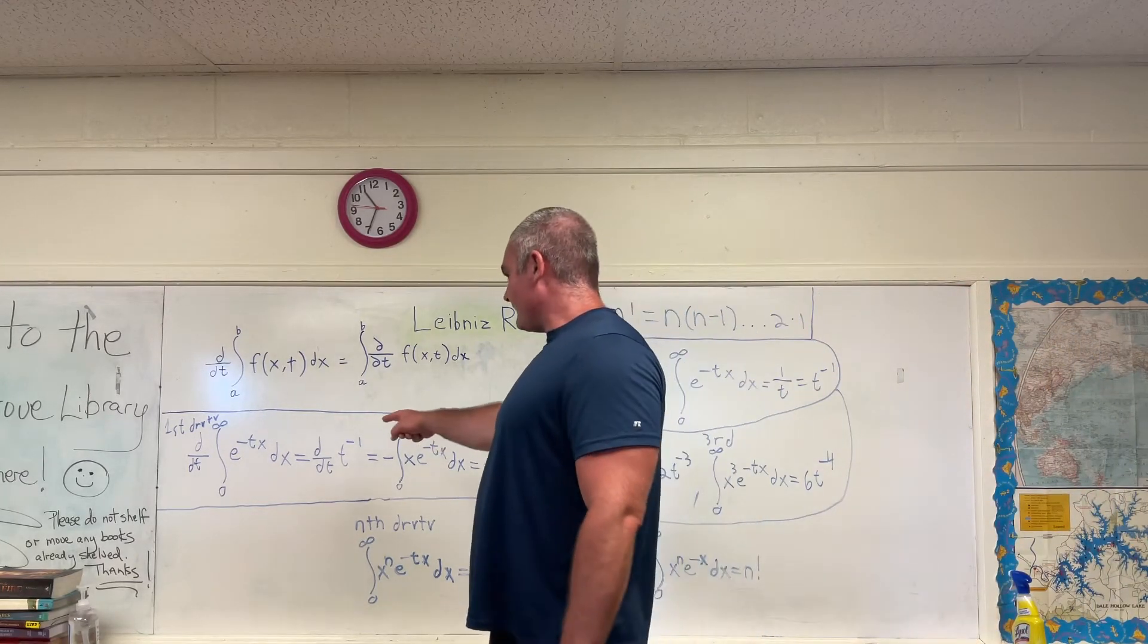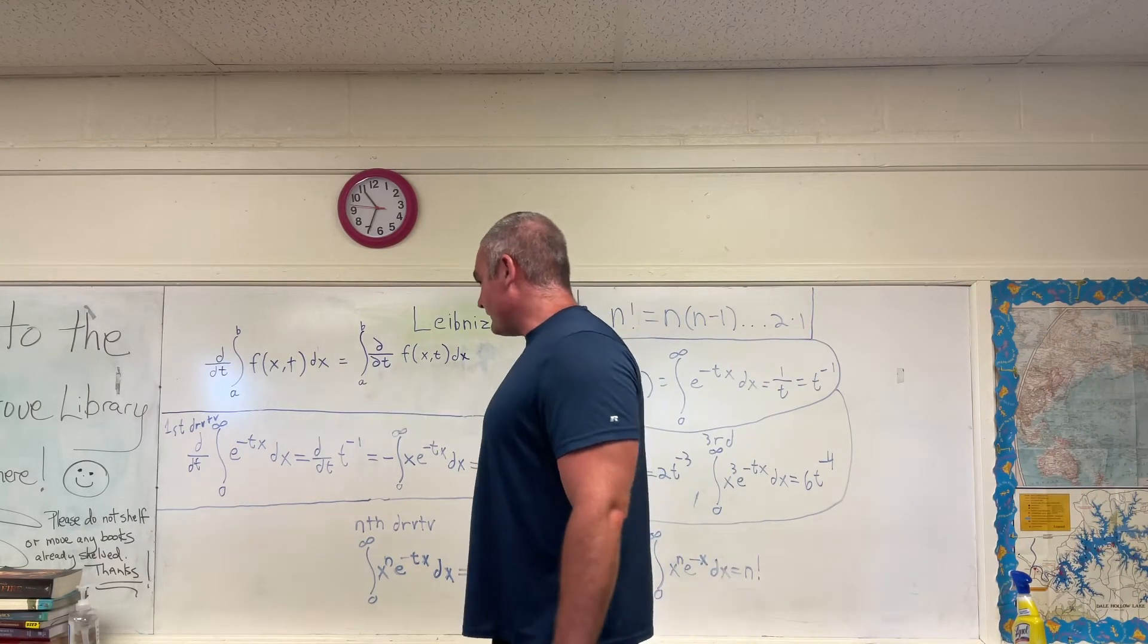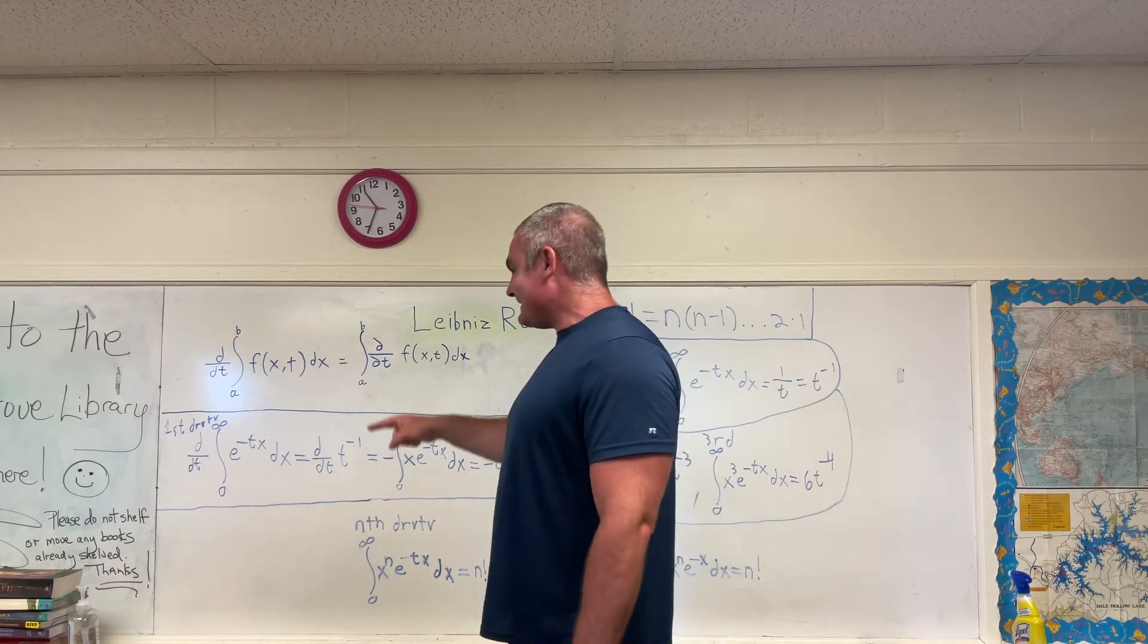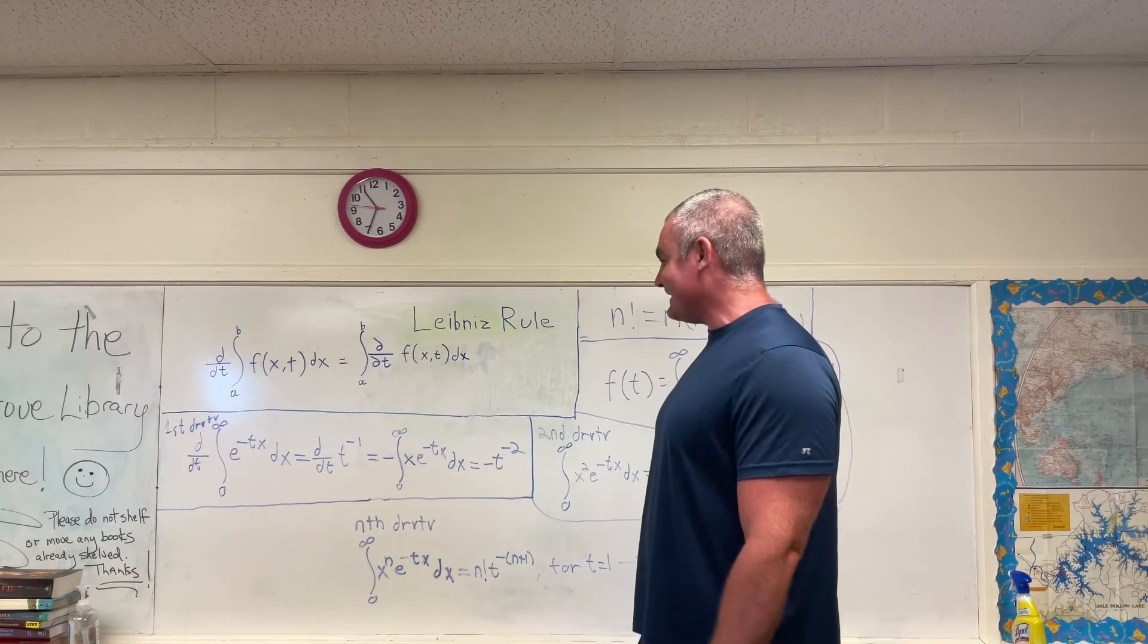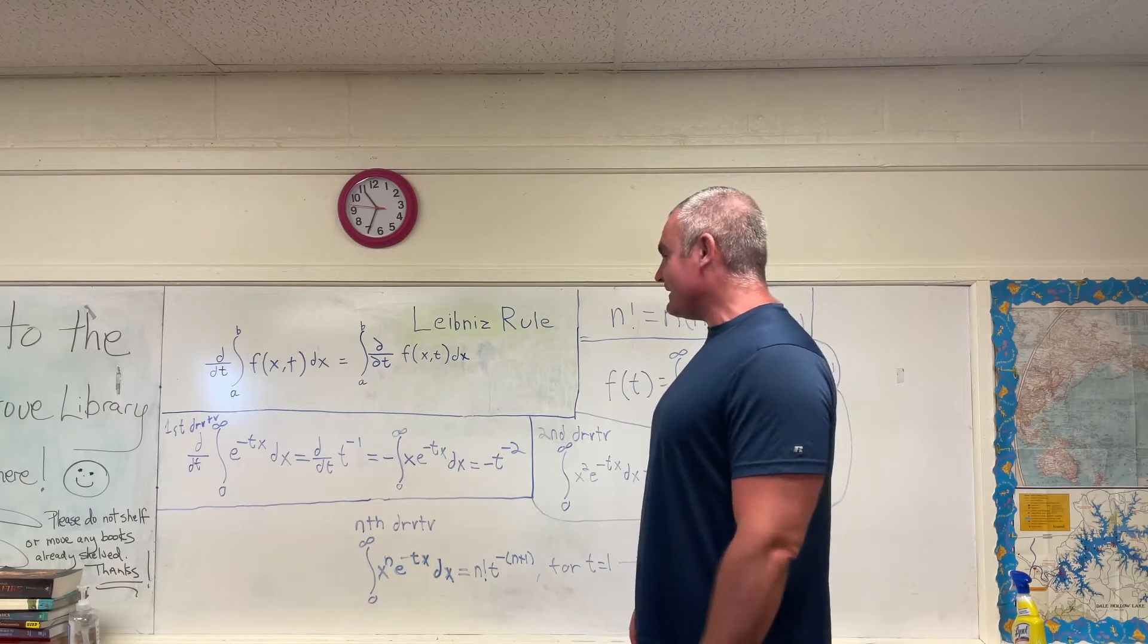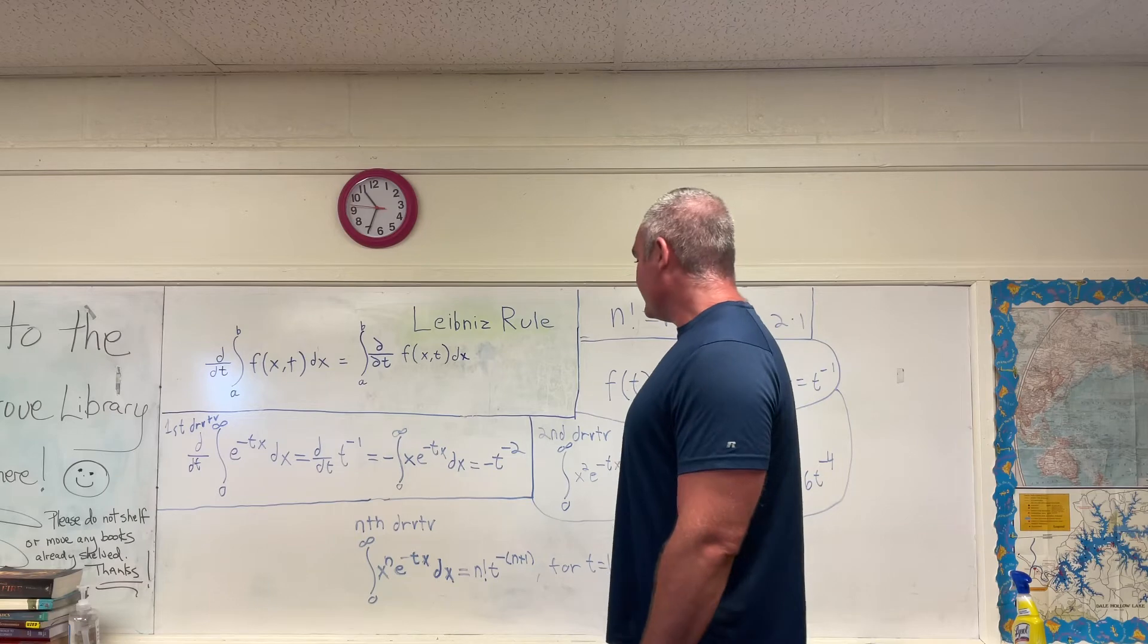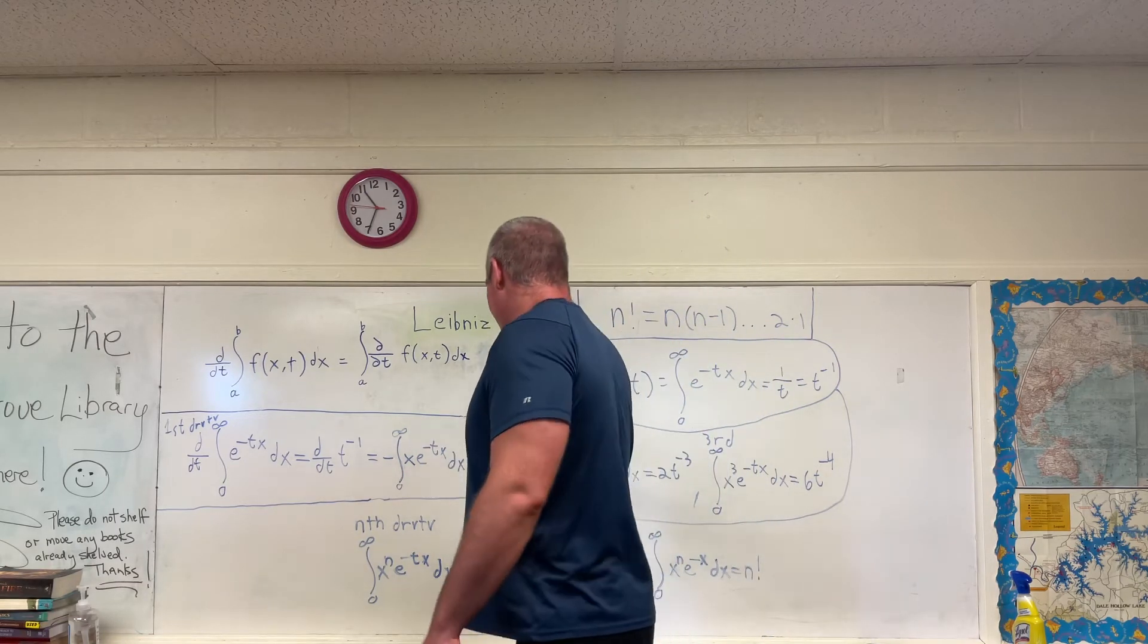So over here, there it is. The first derivative gives you d dt of the integral from 0 to infinity of e to the negative tx dx, being equal to d dt of t to the negative 1. And I have that written there.